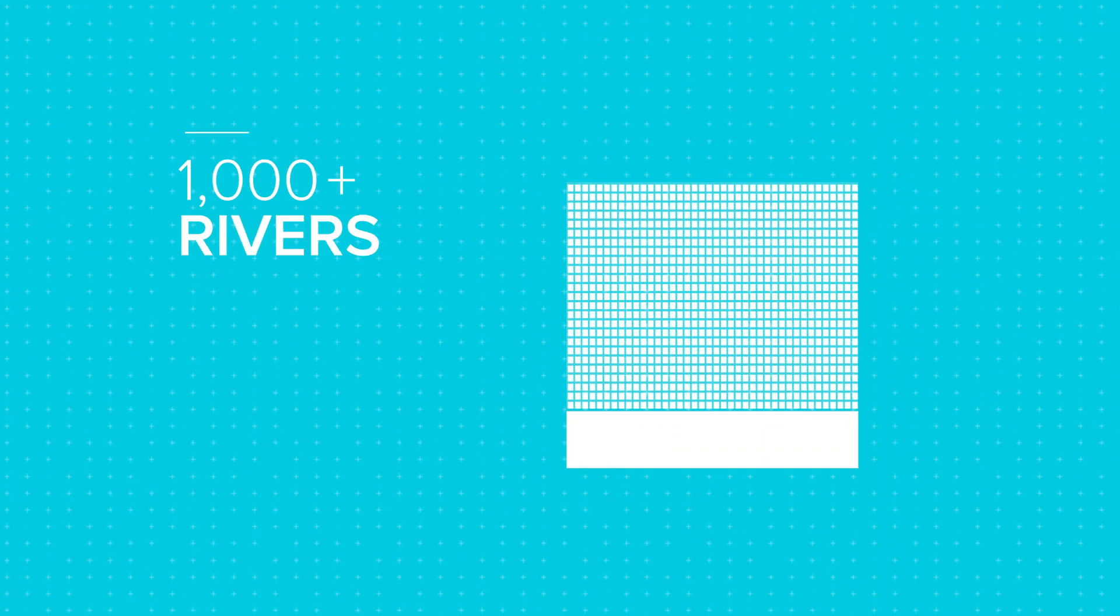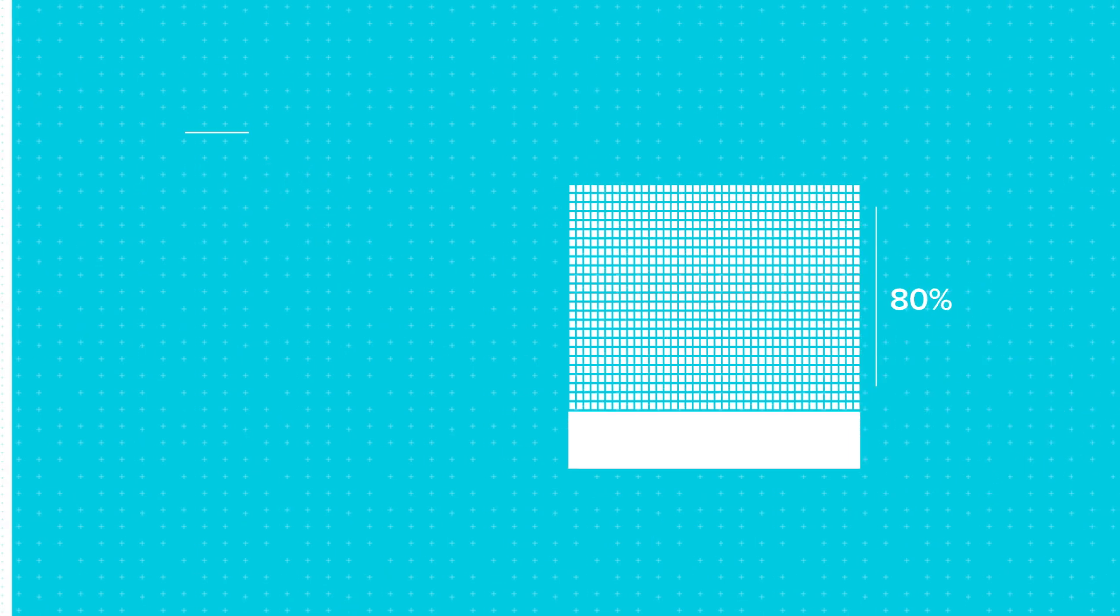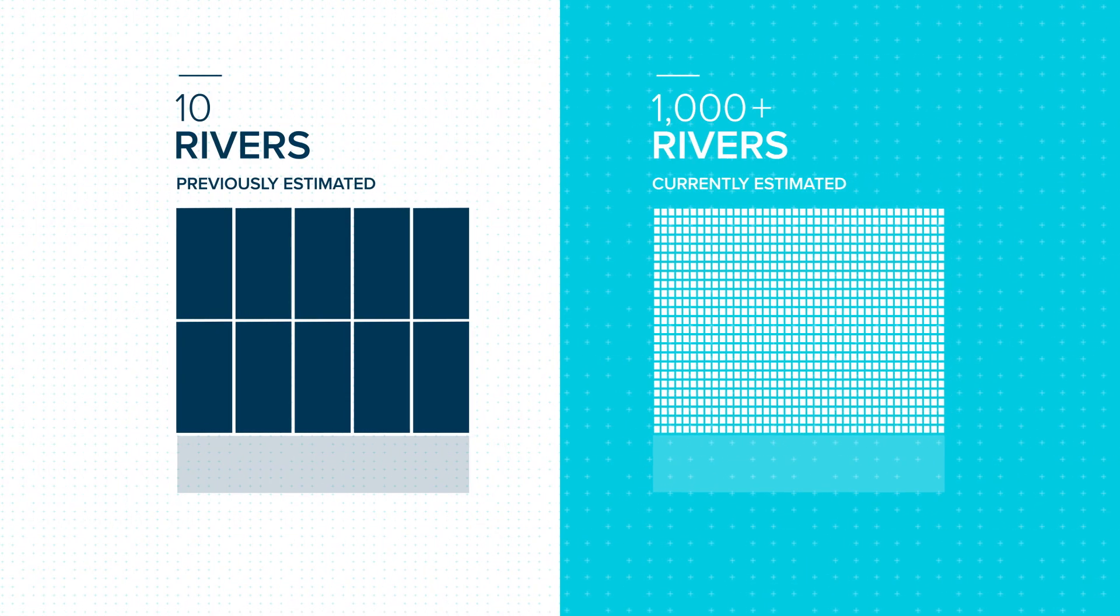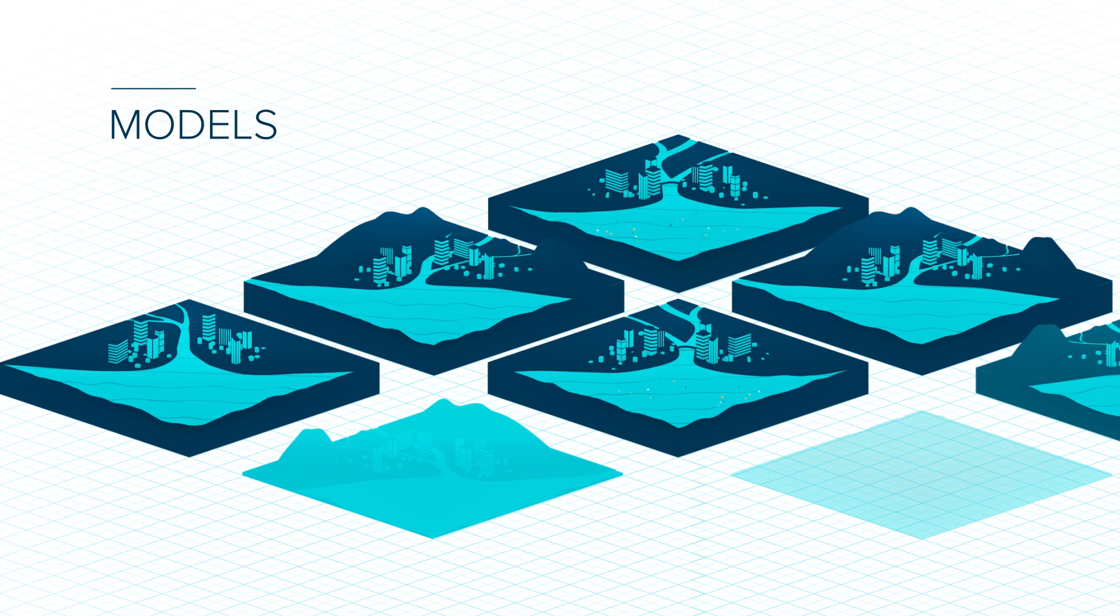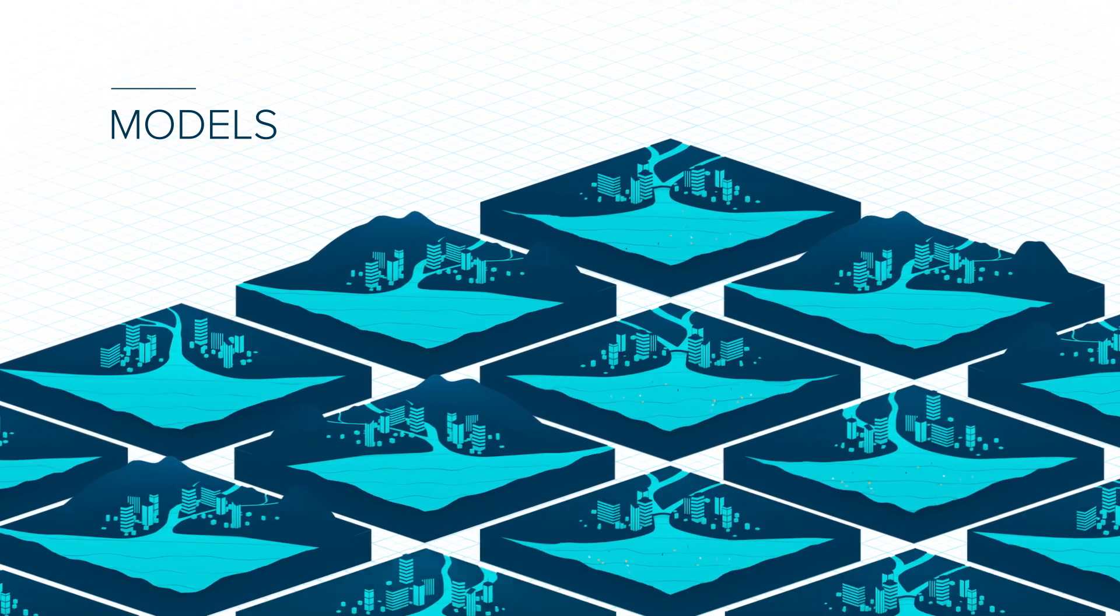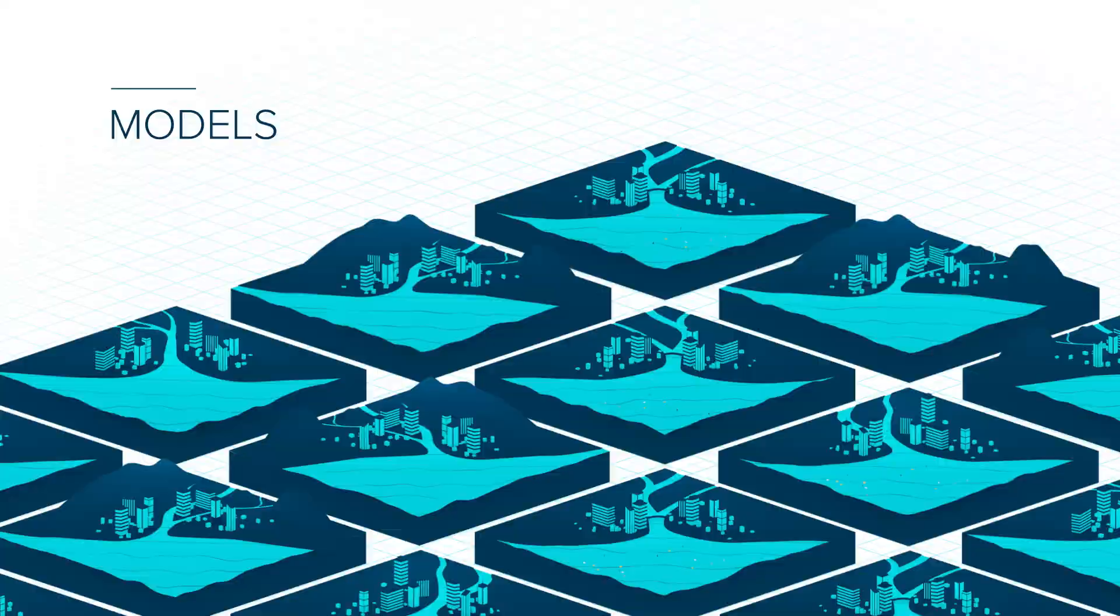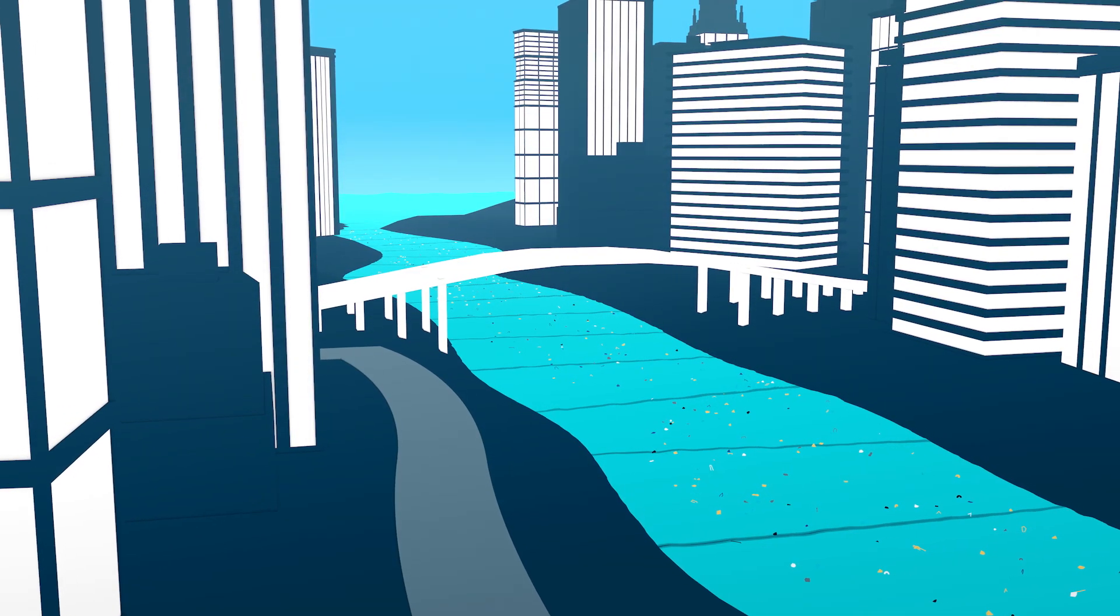More than 1,000 rivers are responsible for 80% of ocean plastic pollution, 100 times more than previously estimated. Instead of a few great rivers, we now believe that many rivers, including small rivers running through dense coastal cities in emerging economies, form the world's plastic hotspots.